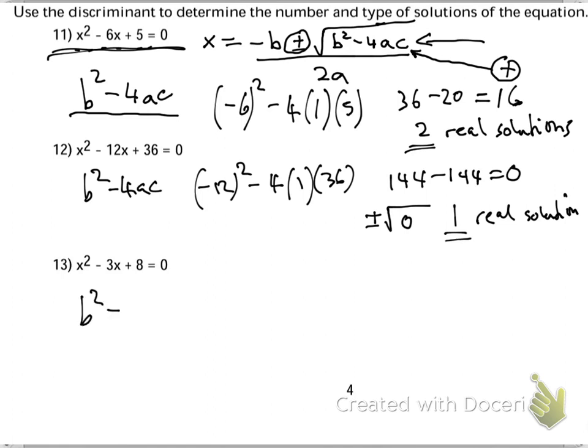Finally, b squared minus 4ac here. Negative 3 squared minus 4 times 1 times 8. This will give me 9 take away 32.